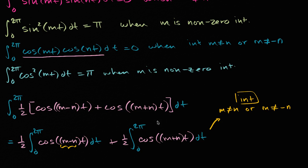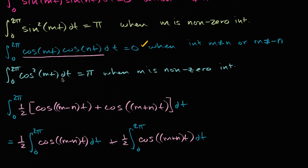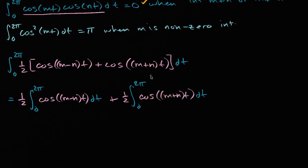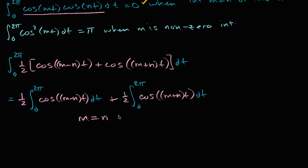Now let's think about the second case, where m is a non-zero integer and m is equal to n. Especially because when we're looking at Fourier coefficients, we care about the non-negative coefficients, at least the way we've defined it. So let's assume that m is equal to n, and that m is not equal to zero.